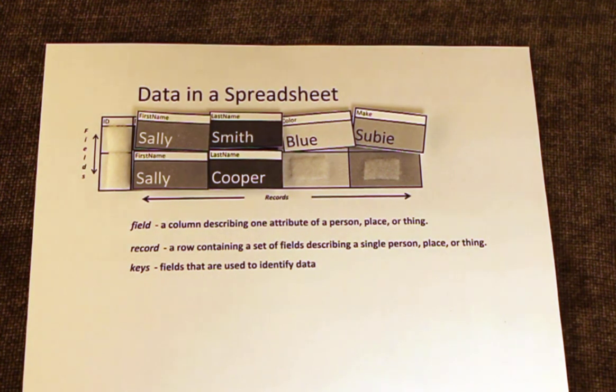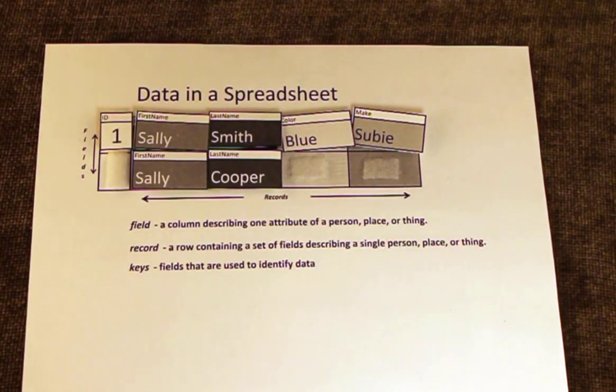We can add a primary key field to uniquely identify Sally. Unlike her last name, this identifier will never change.